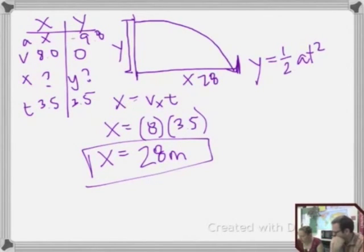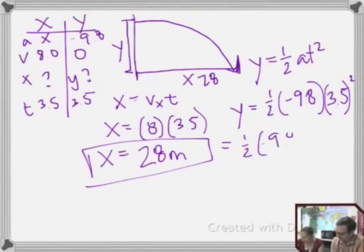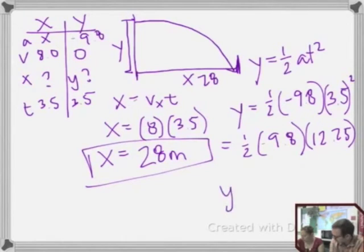Okay. So now we need to solve for Y. So we have 1 half times negative 9.8 times time was what? 3.5? 3.5. Squared. Okay. So now here's the tricky part. When do you square? At the beginning or the end? At the beginning. At the beginning. Because we're not going to square all of it. Just the 3.5. Right. So when we do that, that's going to give us 1 half times negative 9.8 times 12.25. So now I can just multiply that all out, and I get Y equals negative 60 meters.